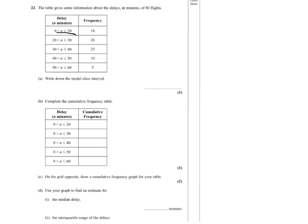So we simply write this out. n is greater than 20, less than or equal to 30, is the modal interval.